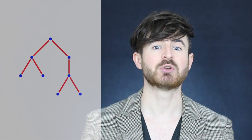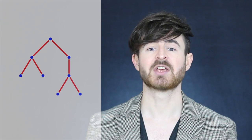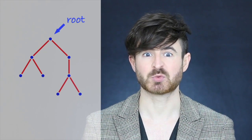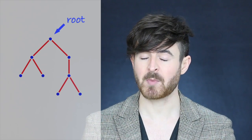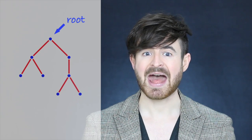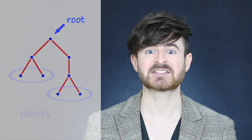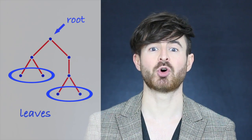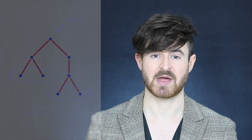A tree is just a collection of nodes, which we draw as blobs, and arcs, which we draw as lines between the nodes. Each tree has a root node, which we draw at the top of the page, and it has several leaf nodes which we draw at the bottom of the page.